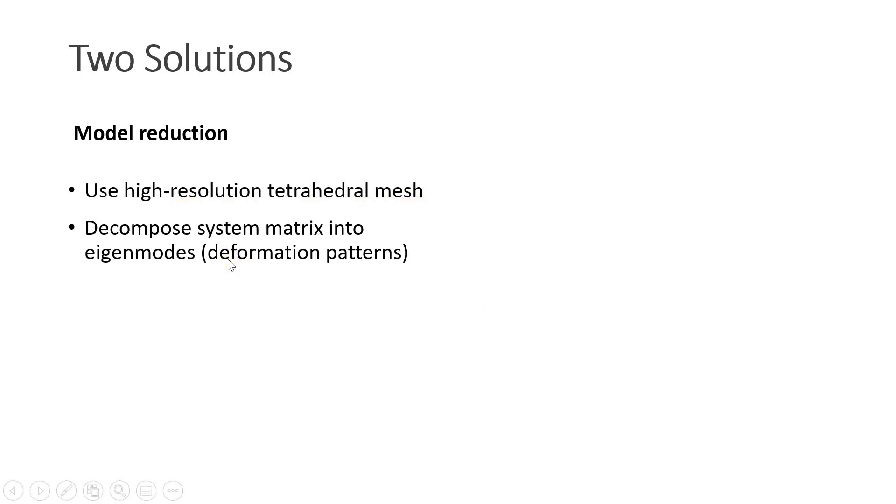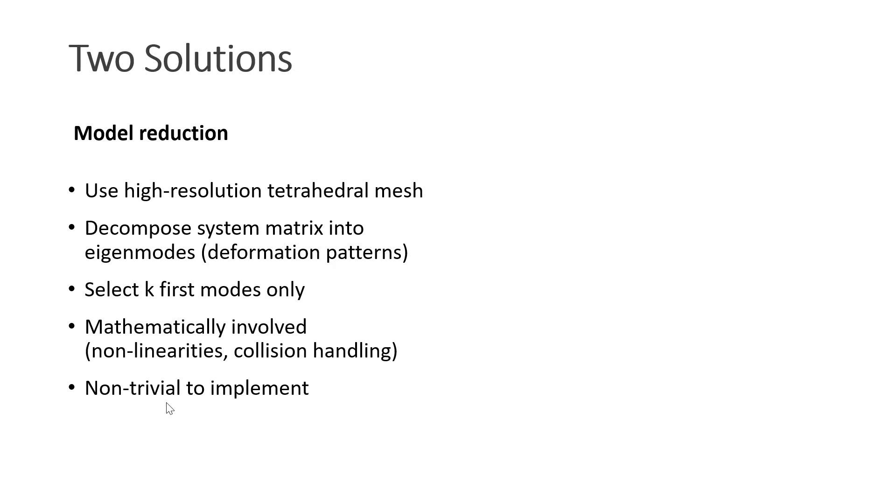There are two main solutions to reduce the complexity of a simulation. The first one is model reduction. Here we start with the high resolution tetrahedral mesh. Then we decompose the system matrix into eigenmodes, which are basically deformation patterns. Then we select the k most important deformation patterns only. The model is mathematically involved, especially for non-linear deformations and for collision handling. It is also highly non-trivial to implement.